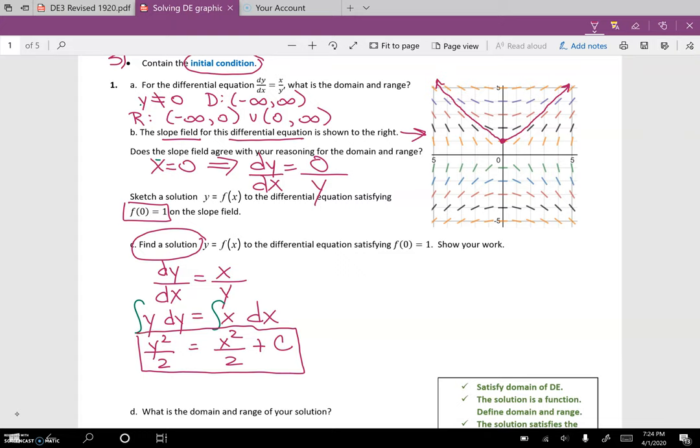This is called the general solution for my differential equation. It's general because it could be any value of c. But we are given a specific point, and we need to find the particular solution. We're going to plug in (0,1) and find the value of c. So I have 1²/2 = 0²/2, so c = 1/2.